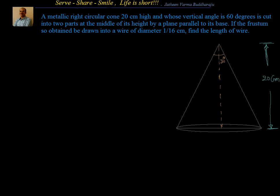We have been given that a metallic right circular cone 20 centimeter high and whose vertical angle is 60 degrees is cut into two parts at the middle of its height by a plane parallel to its base. If the frustum so obtained be drawn into a wire of diameter 1/16 centimeter, find the length of the wire.